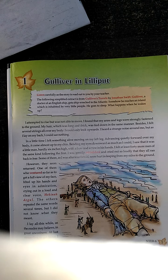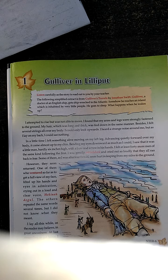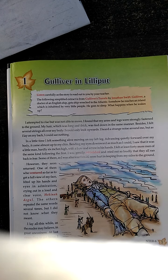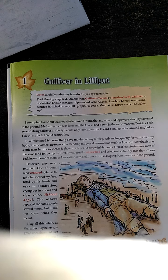मैंने उठने की कोशिश की लेकिन मैं हिल भी नहीं पा रहा था। मैंने पाया कि जो मेरे हाथ और पैर थे वो जमीन पर बहुत कसकर बाँधे हुए थे। मेरे बाल जो लंबे थे, thick थे, उनको भी इसी प्रकार से जमीन पर बाँधा हुआ था। इसके अतिरिक्त मेरे सारे शरीर को जमीन से बाँध दिया गया था। मैं सिर्फ ऊपर की और देख पा रहा था। मैंने अपने आसपास एक विचित्र प्रकार का आवाज सुनी, लेकिन मैं अपनी कमर के बल लेटा हुआ था और मुझे सिर्फ ऊपर की और दिखाई दे रहा था।